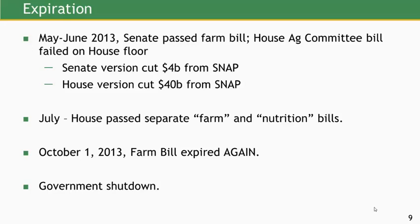In May and June, the Senate passed a Farm Bill, the House Agriculture Committee passed a bill, and that bill failed on the House floor. Two years in, we still didn't have a bill. The Senate version cut $4 billion from SNAP; the House version cut $40 billion—a major point of contention throughout the entire process.